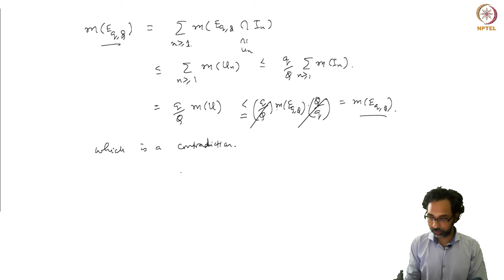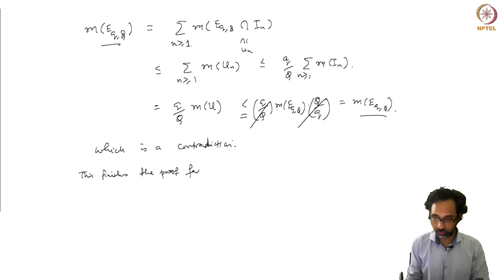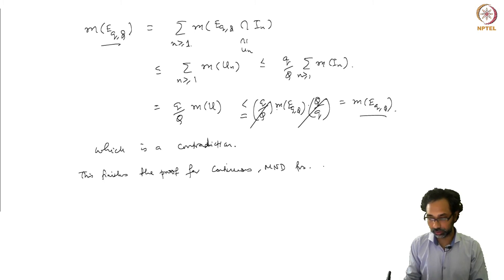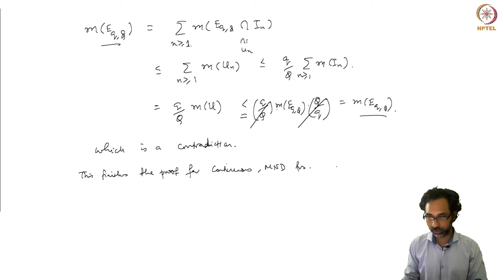This finishes the proof of the differentiation theorem for continuous monotonically non-decreasing functions, establishing the almost everywhere differentiability for such functions.